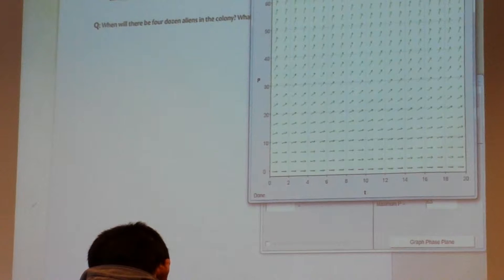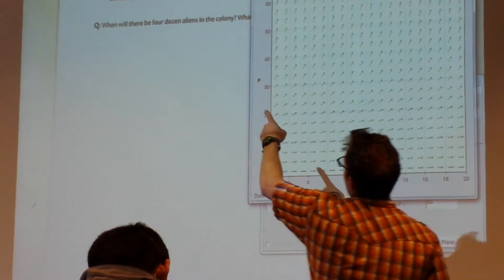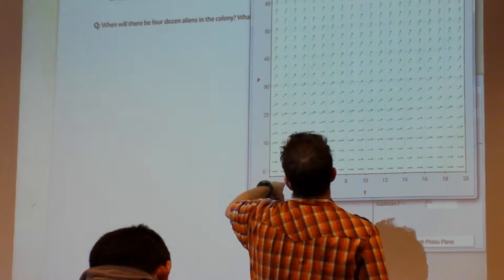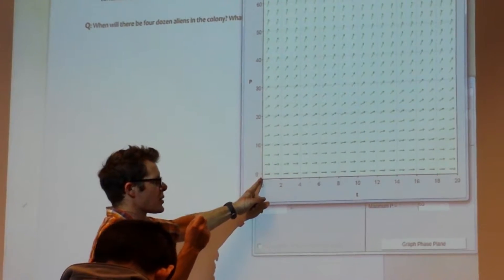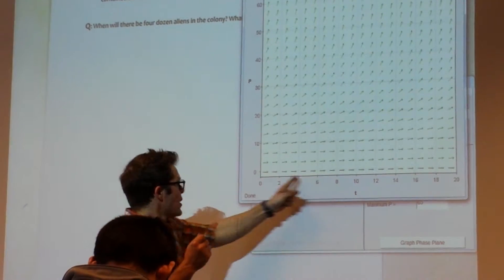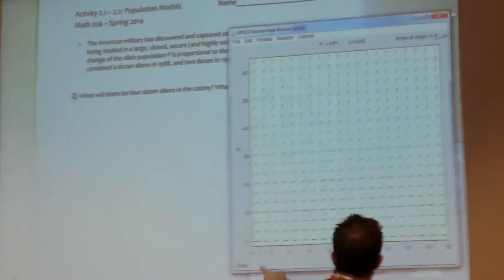So here's the direction field for that differential equation. I just put t equals zero represents the year 1988. So this is years after 1988. And how many were there in 1988? Year zero?